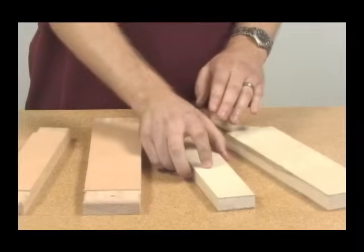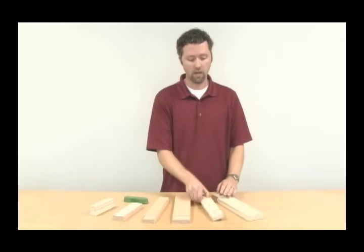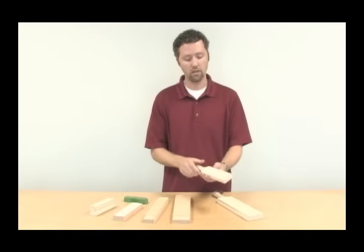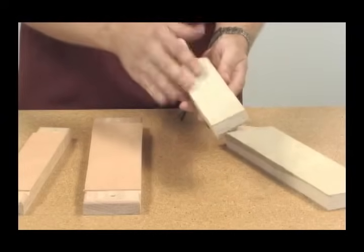And then we have what we call our paddle strops. All of our paddle strops are two-sided. We have a suede side, and then we have a smooth side.